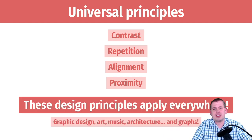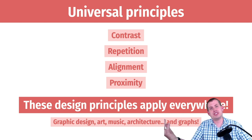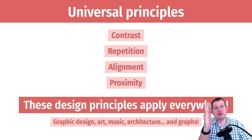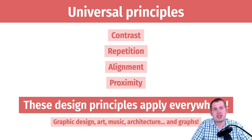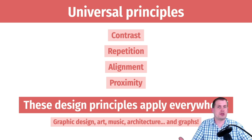These principles are somewhat universal — they apply not just to graphic design but also to art and music. You need contrasting chords throughout different composed pieces. They apply to architecture too: you need good contrasting elements on the outside of houses, good repetition, and windows to be aligned with each other across different floors. Specifically, they also apply to graphs and communicating stories with data, which is why we spent time in this first week going over these foundational principles.